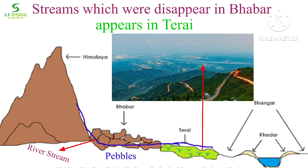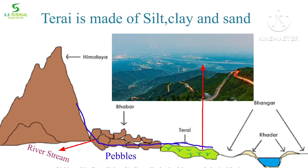All the streams which disappear in the Bhabar region reappear in the Tarai region, which is made of comparatively fine-grained deposits like sand, silt, and clay.